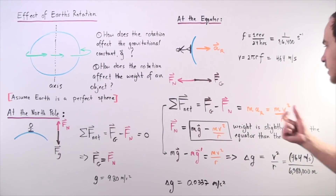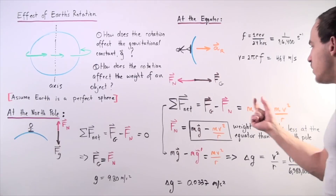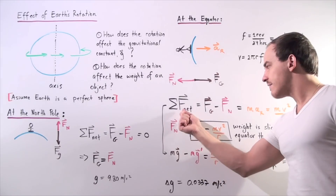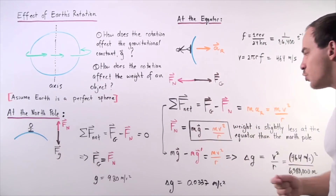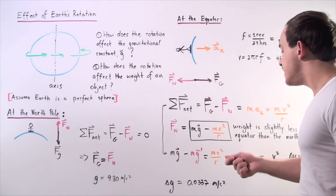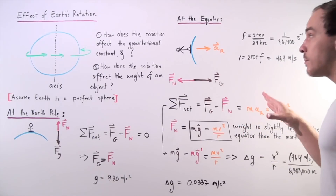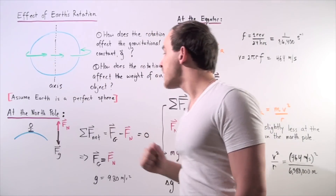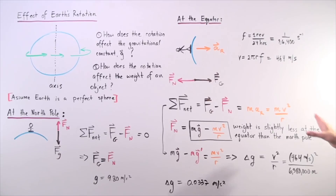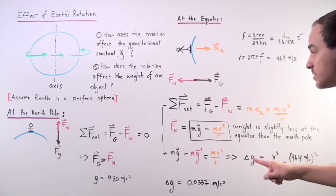Rearranging the equation to find the normal force, we get: the normal force equals m times g minus m times v² divided by r. This is the weight of the person found at the equator, and notice that it's slightly less at the equator than at the North Pole — less by the term mv²/r.